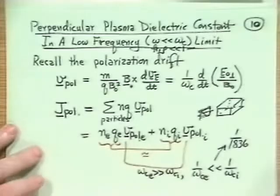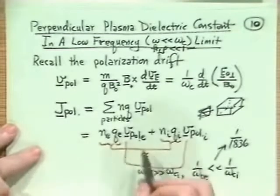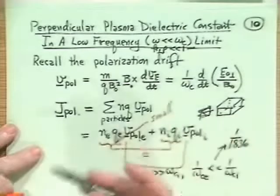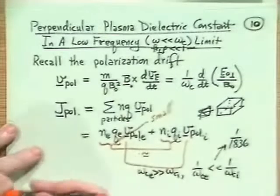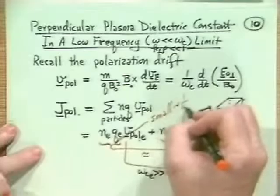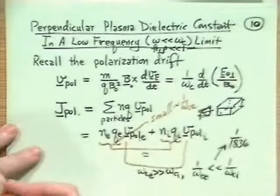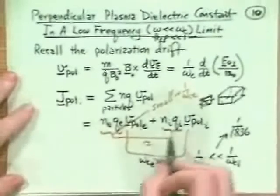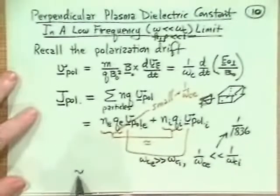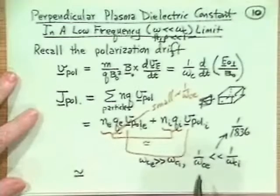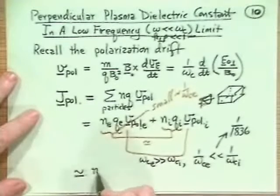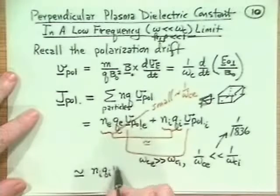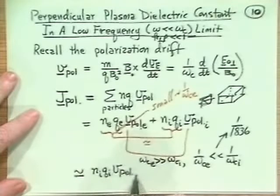So what this means is that, in fact, the electron polarization drift is quite small. Namely because it's of order 1 over omega_CE, and that's quite small compared to the 1 over omega_CI term. So our polarization drift is then mostly carried, it turns out, by the ions. So it's N_I, Q_I, V polarization ions.